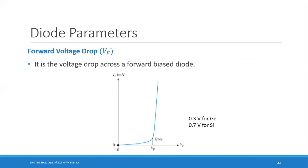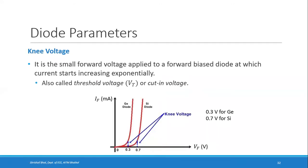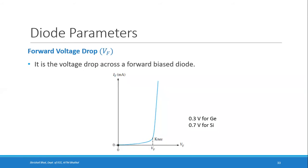Another parameter is the forward voltage drop. When you forward bias a diode, as you increase the voltage, initially the current is very small. Once the voltage crosses the knee voltage or threshold voltage — which equals the barrier voltage of that diode — the current starts increasing rapidly and exponentially. The voltage across the diode then appears almost constant on the graph.